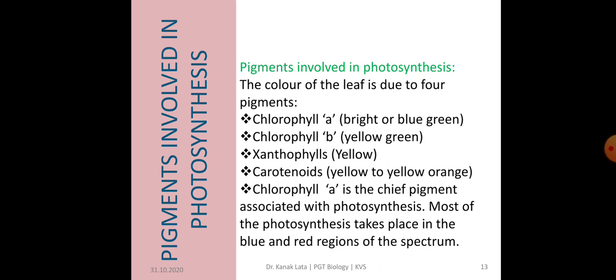Thus, chlorophyll B, xanthophyll and carotenoids are called accessory pigments that also absorb light and transfer the energy to the chlorophyll A.